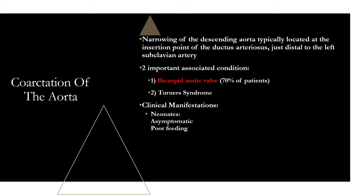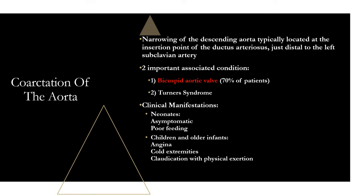Clinical manifestations: neonates may be asymptomatic or have poor feeding. Children may have some angina due to decreased blood flow, trouble getting blood out of the aorta, cold extremities, and claudication with physical exertion — cramping and pain in the lower extremities during exercise from decreased blood flow. In adults, hypertension is the classic presentation, though that's obviously non-specific given how many adults have hypertension.